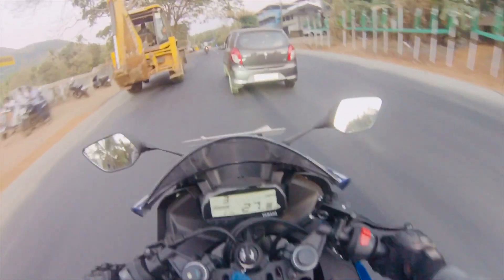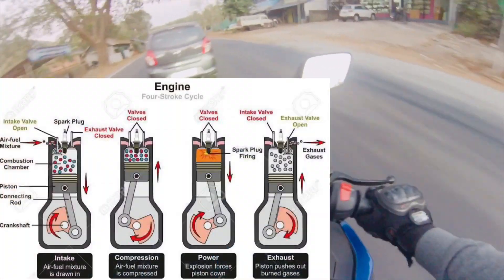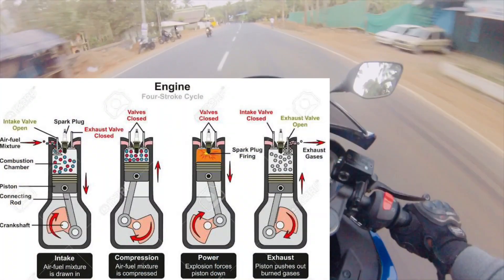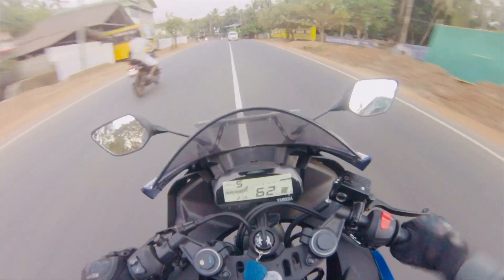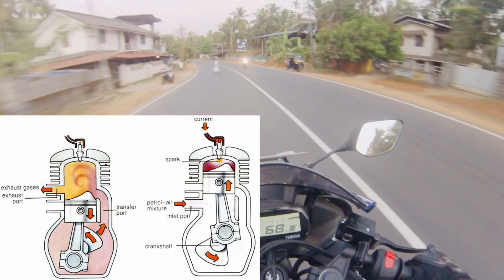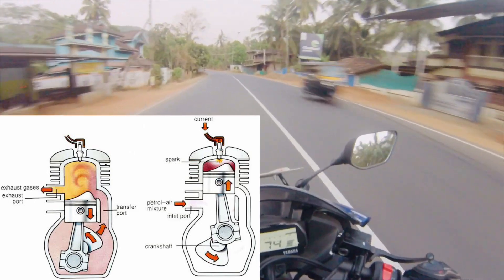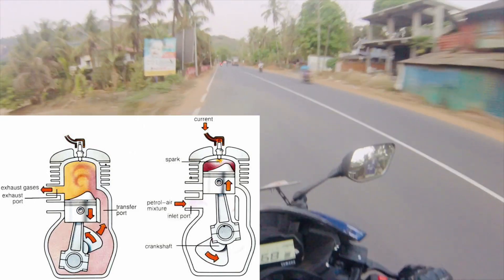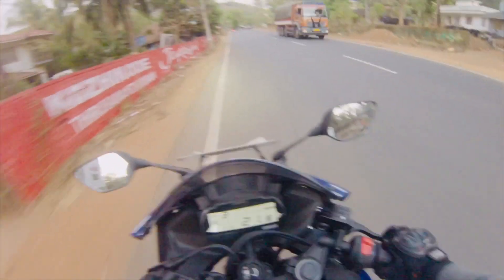The four-stroke has four sections: compression, power, and exhaust. The two-stroke operates with an upward and downward motion, which is what the two-stroke means.